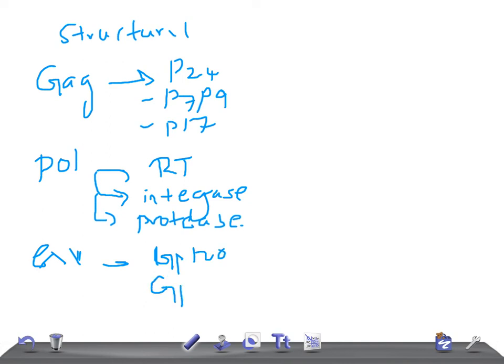GP120 is really very important. So structural genes: we have gag, pol, and env.